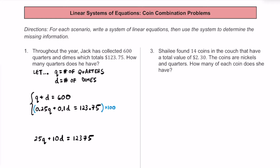Now I'll use elimination to solve this system. I'm going to eliminate D since we're solving for Q. So I'll multiply the entire top equation by 10, giving us 10Q plus 10D equals 6,000.